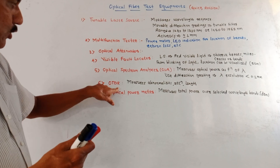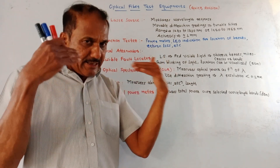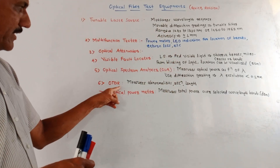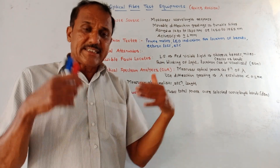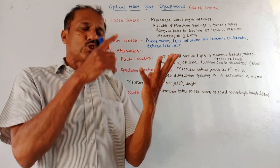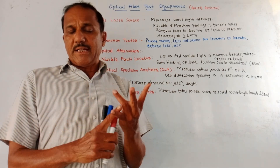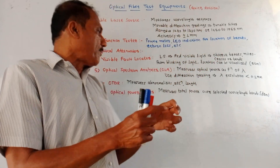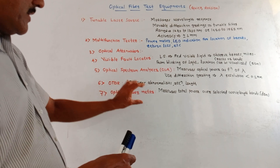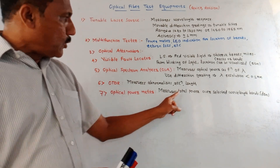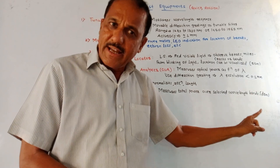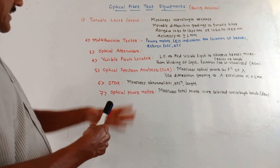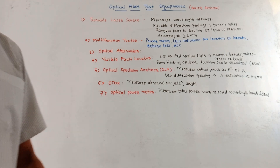Then OTDR — optical time domain reflectometer. This we are going to study in detail as a separate question may be expected on OTDR. It is used to measure abnormalities in the optical cable, gives measurement of attenuation while signals transmit through the fiber optic cable, and is also used to measure the length of the optical cable. Then optical power meter measures the total power over a selected wavelength band, indicated usually in dBm.